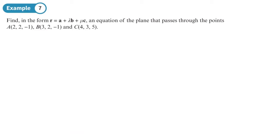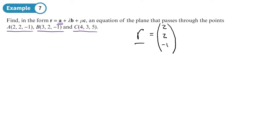The equation of the plane in the form R equals A plus lambda B plus mu C passes through points A, B and C. We can use any one of these as A — I'm going to choose the first one. So I'll have R equals, written as a column vector: 2, 2, negative 1. I could have instead used 3, 2, negative 1 or 4, 3, 5, or any other point I know is in the plane, but I've chosen the first one.